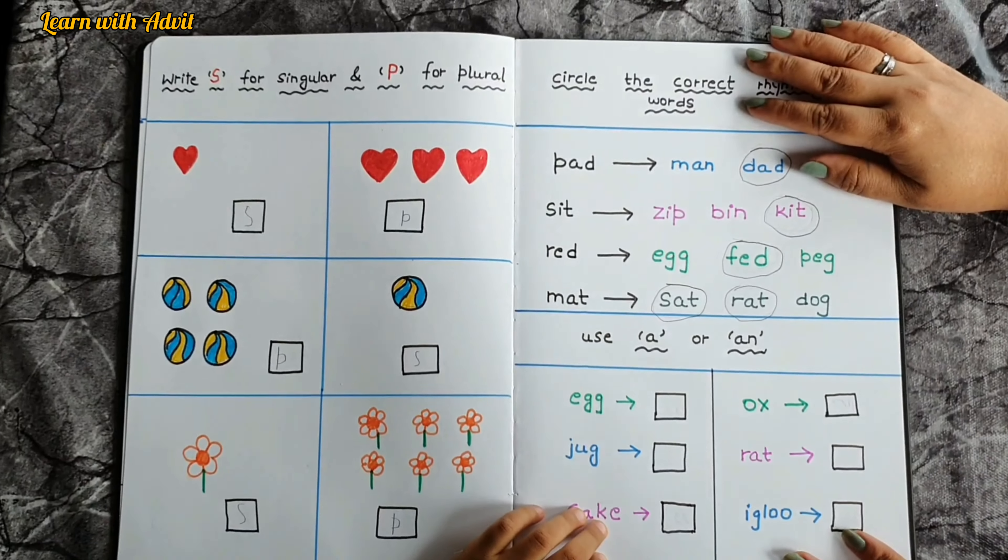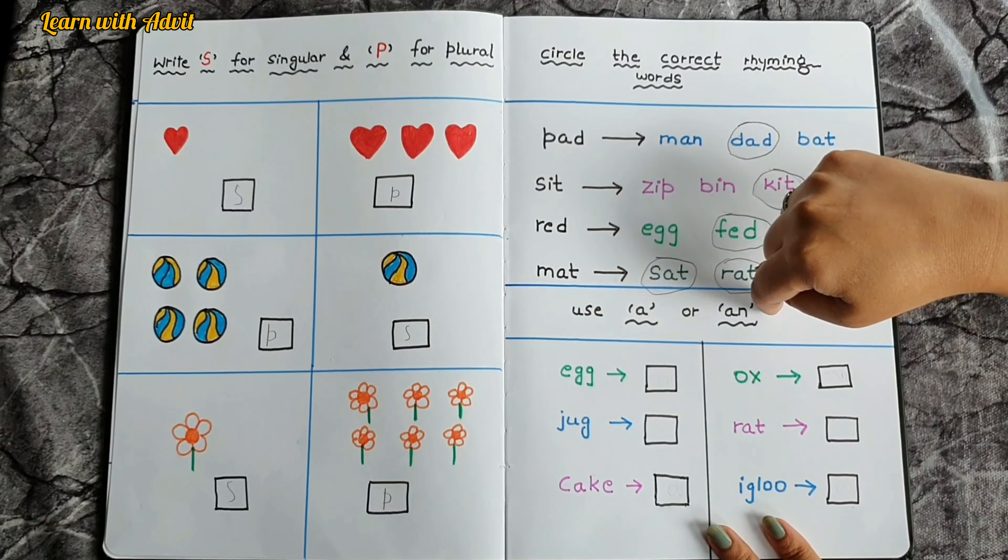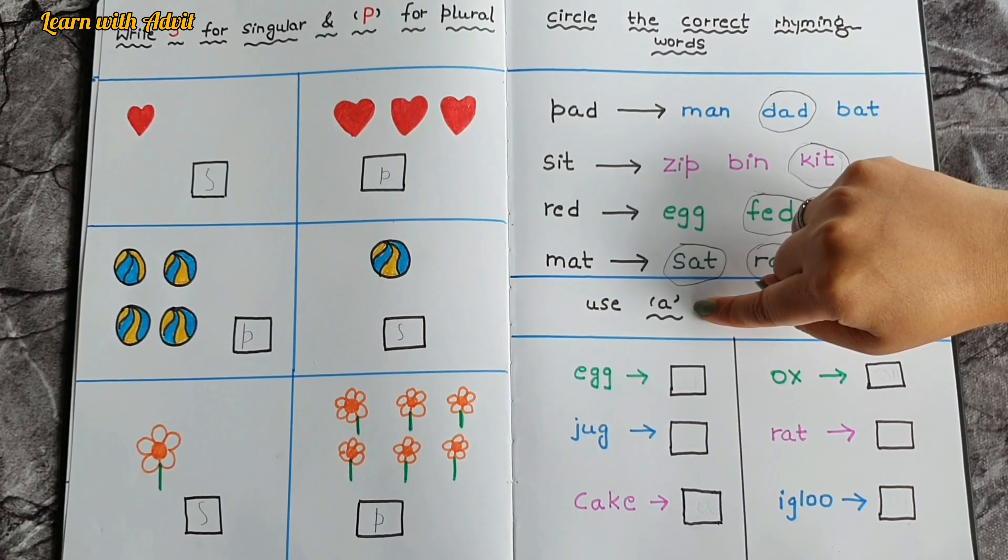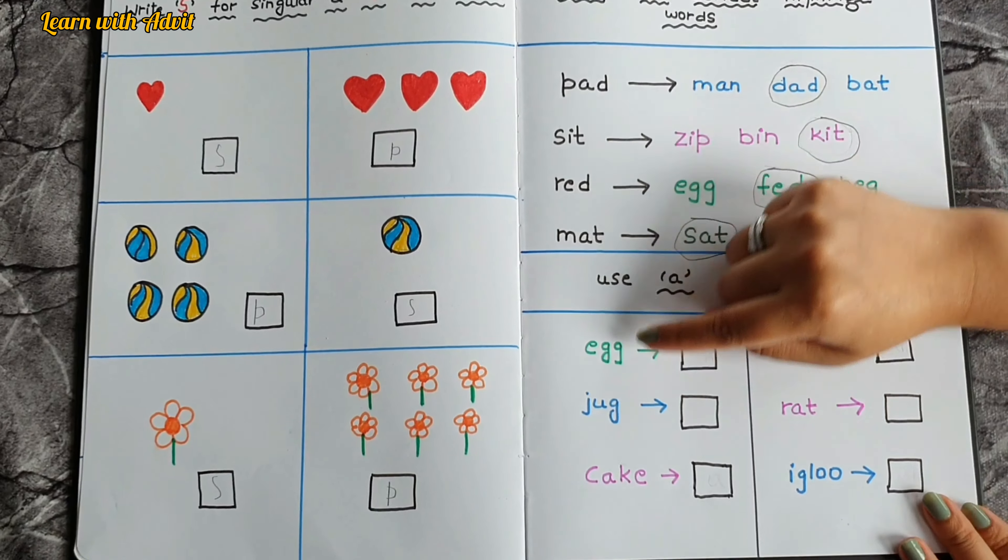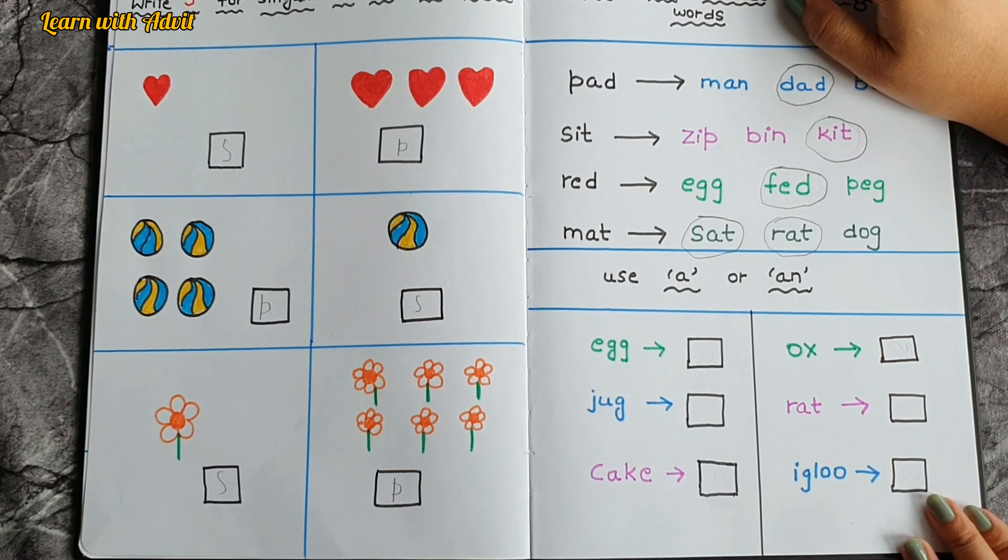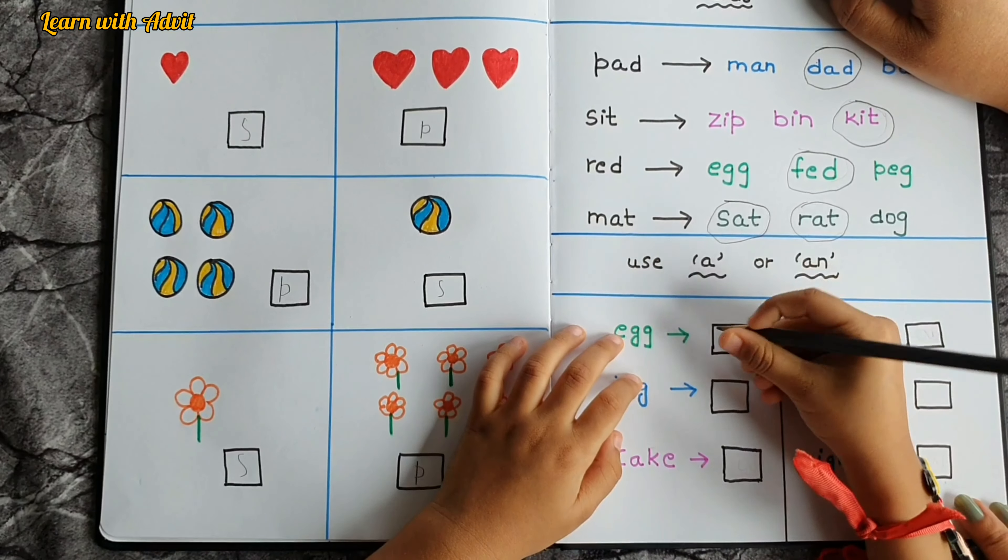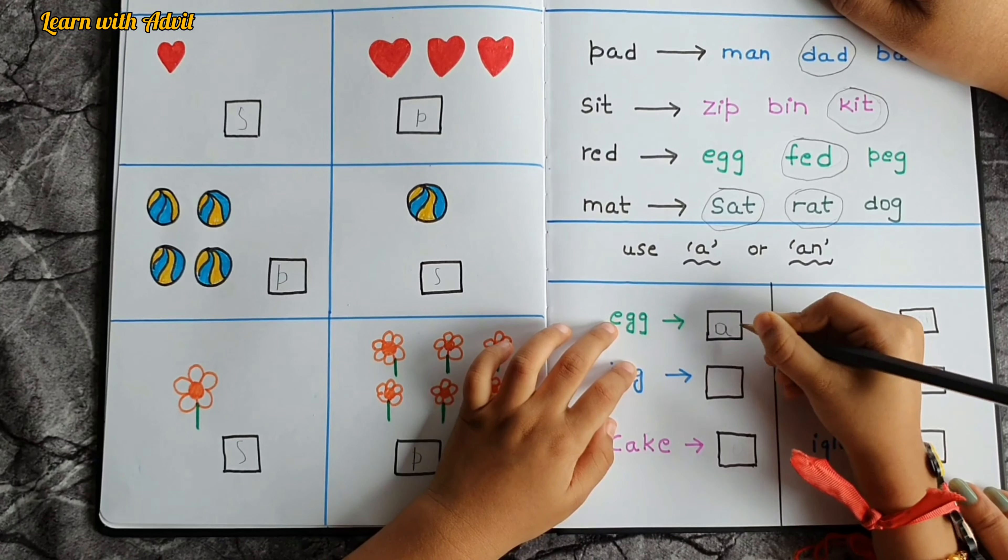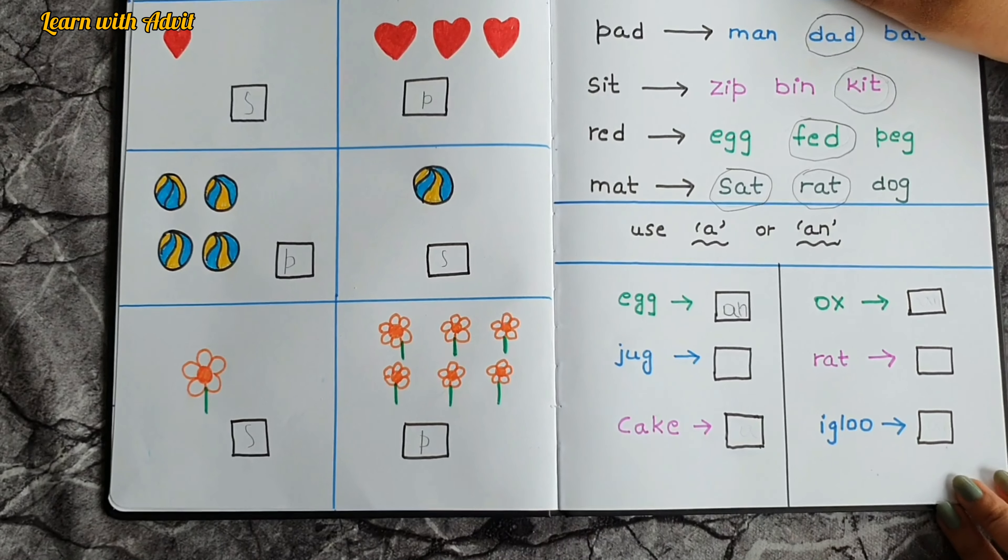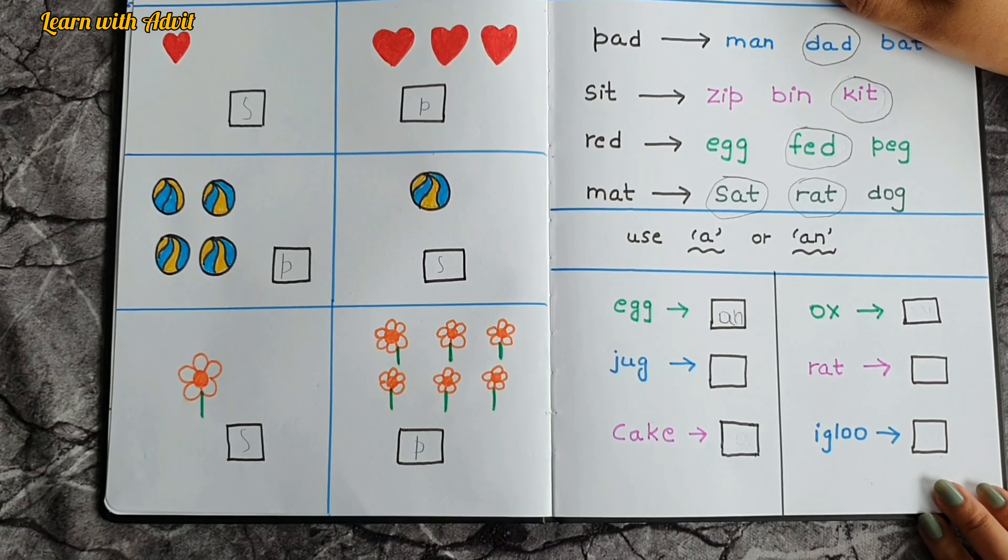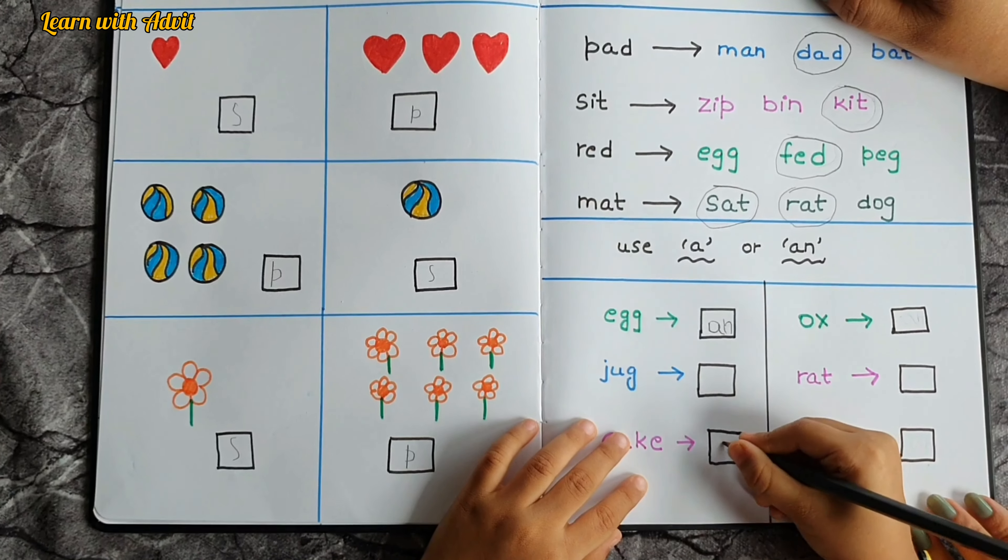Here what you have to do, you have to use 'a' or 'an', okay. So 'a' we are using for the consonant word and 'an' we are using for the word that starts with the vowel. So here is egg, so tell me what will come, 'a' or 'an'? 'An' because 'e' is a vowel, yeah very good. For cake, cake, it starts with 'c', because 'c' is a consonant so what will come? 'A', very good.